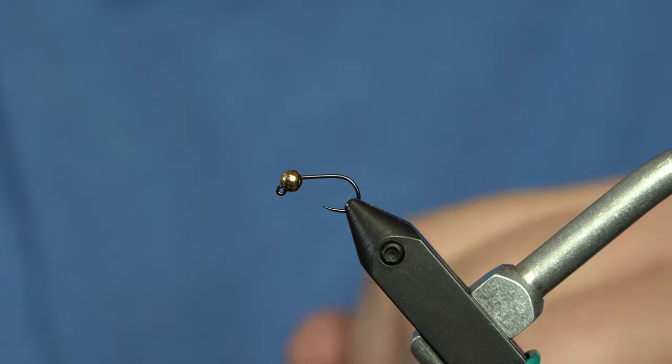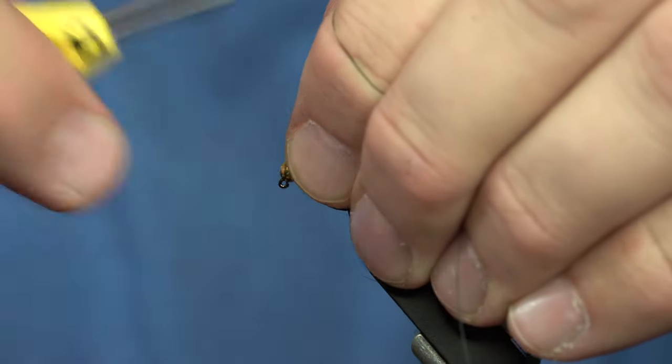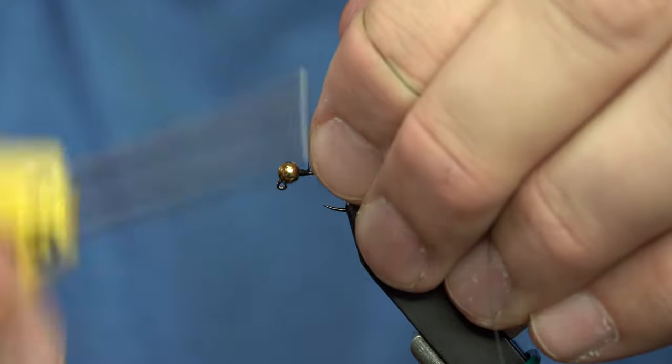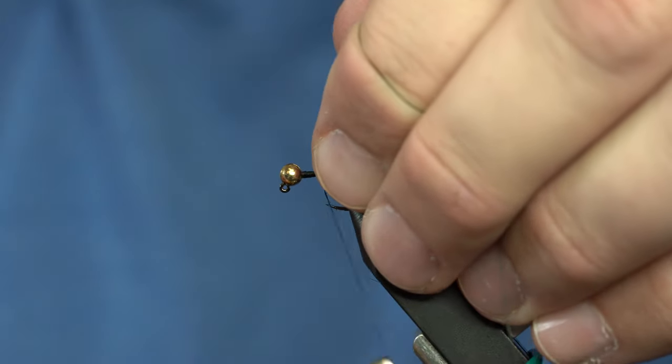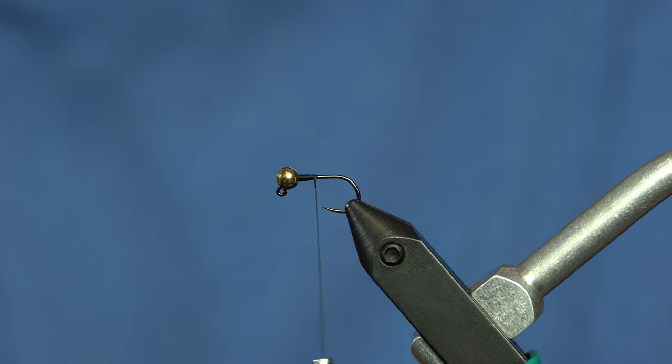It's basically a zebra midge with a tail with a hot spot. So we're just going to start wrapping this with 140 denier thread. I like using 140 denier thread on this fly because we're going to build up the body out of thread a little bit. It just makes it a little faster.